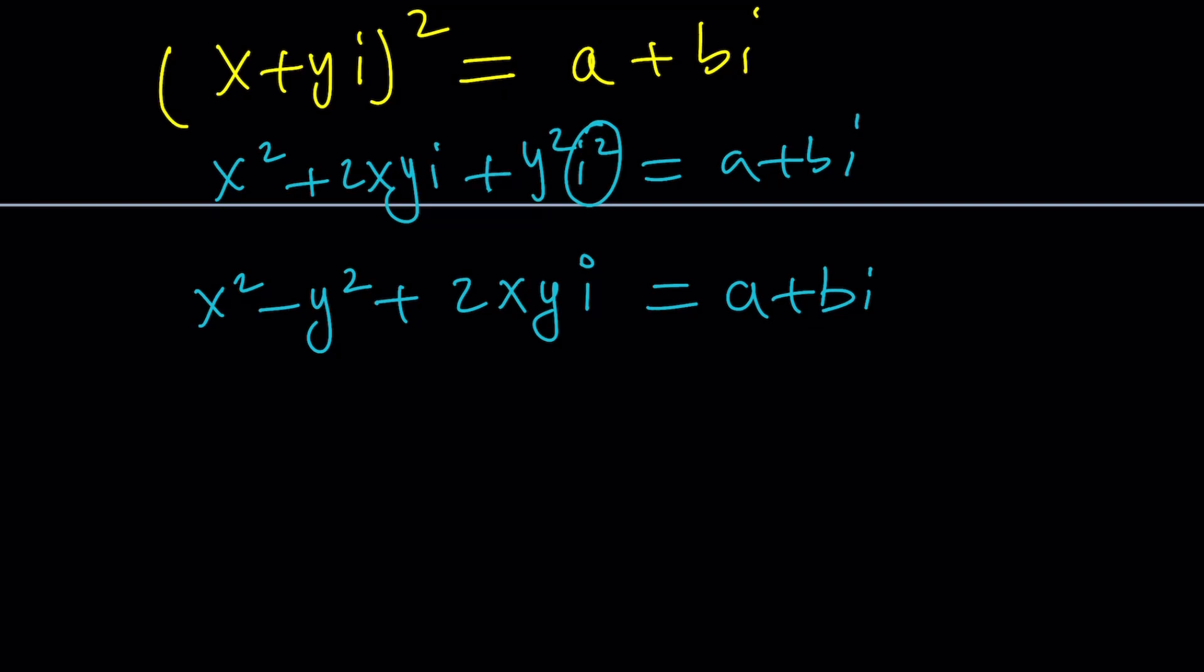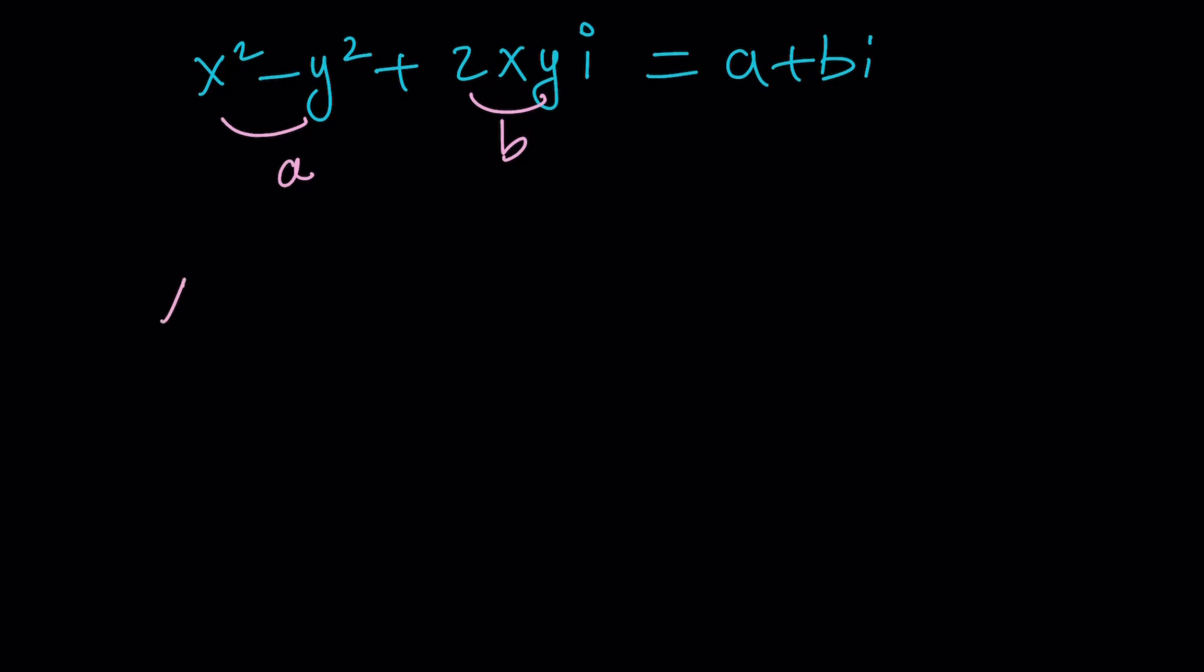Now take a look. We have complex numbers on both sides. When are two complex numbers equal? When the real parts are equal and that implies their imaginary parts also have to be equal. So from here this should be a and this should be b. It means that x squared minus y squared is equal to a and xy is equal to b over 2. I want to get xy because I want to use some identities with polynomials.